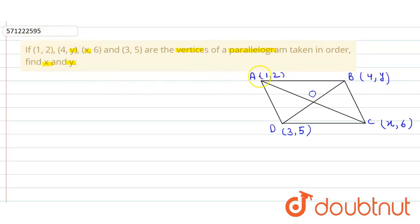So here we simply consider the four coordinates A, B, C, D as shown in the figure. We know that in parallelogram, diagonals bisect each other.